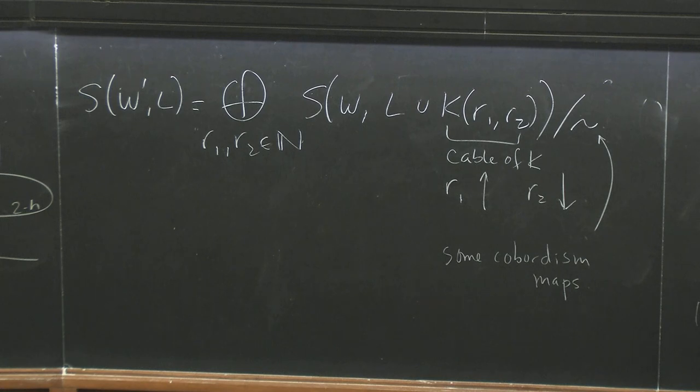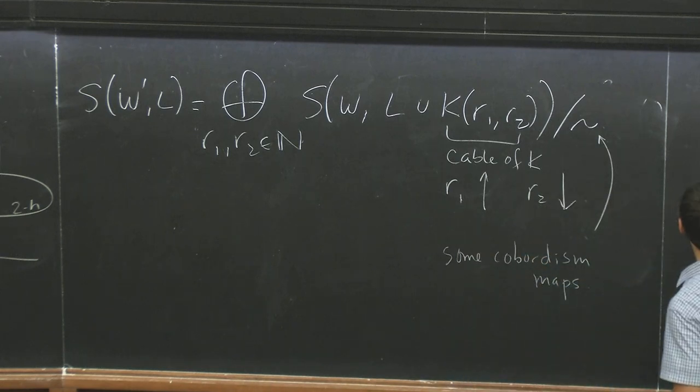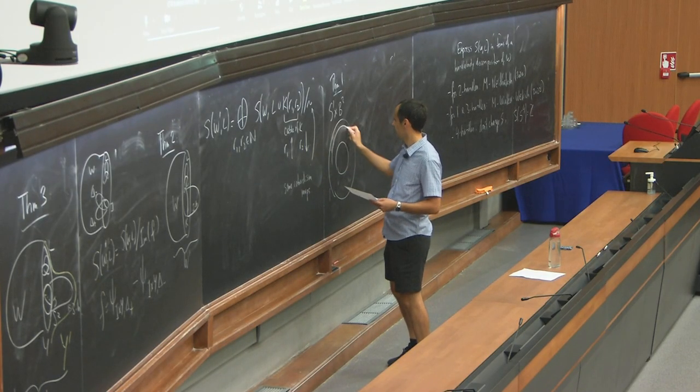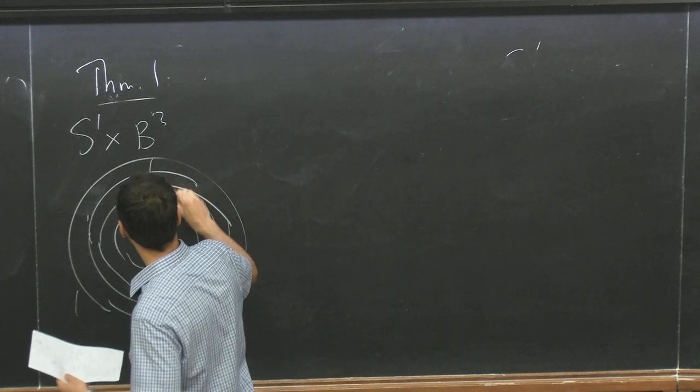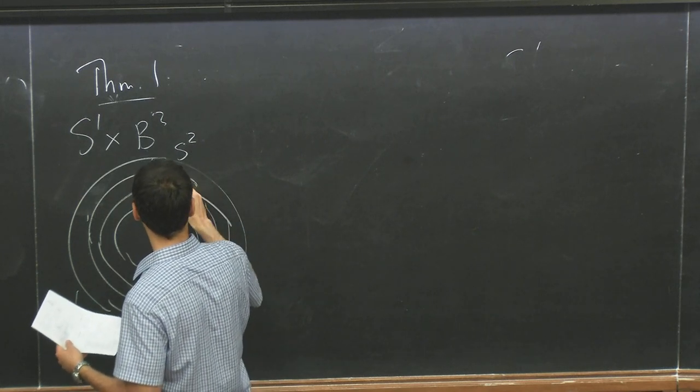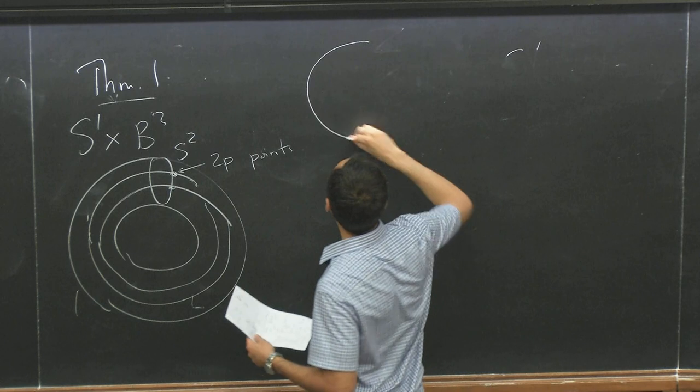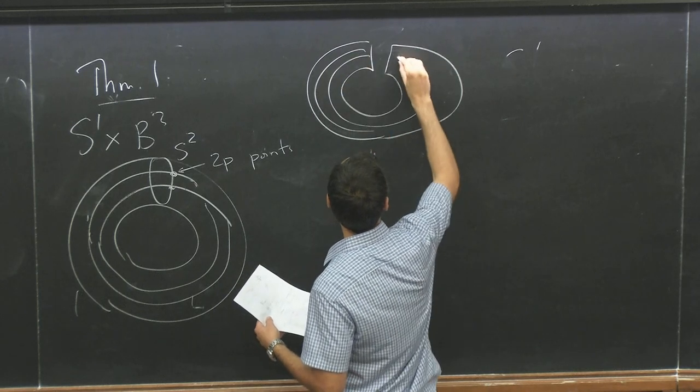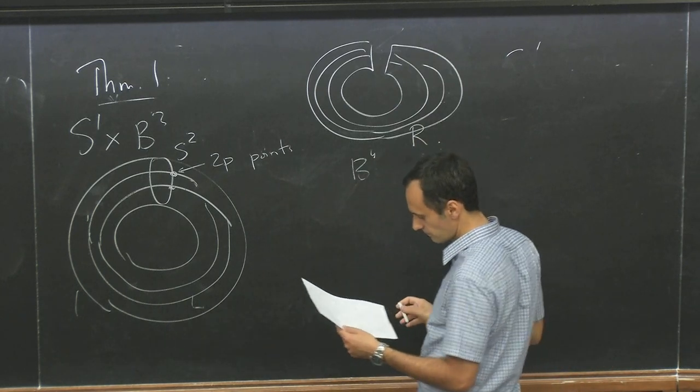All right. And finally, for one handles, let me just maybe explain the simplest case. If I have one handle, and I attach it to a ball, let's say I have S1 times B3. And I have some link in here. Okay, then I cut this along a B3. So the boundary is S2. Let's say the link intersects it maybe in two points.